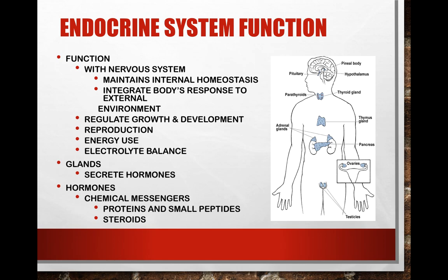The endocrine system primarily involves glands in our body. We will talk about the pituitary, the pineal body, the hypothalamus, the thyroid gland and parathyroids, the thymus gland which is in our mediastinum, the adrenal glands that sit on the top pole of our kidneys, and the pancreas, which secretes the hormone insulin — very important. And then the reproductive glands: the ovaries in females and the testicles in males.